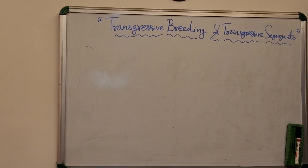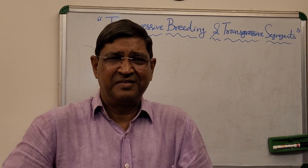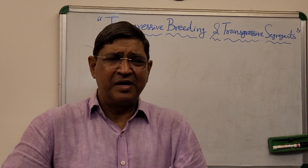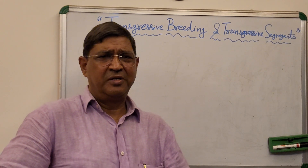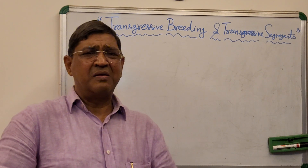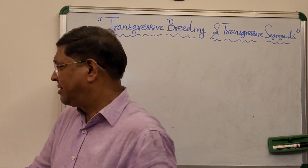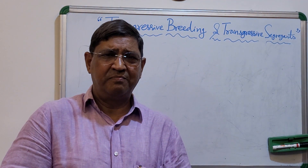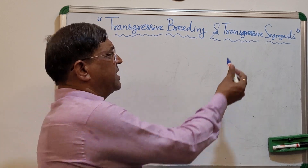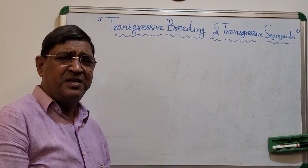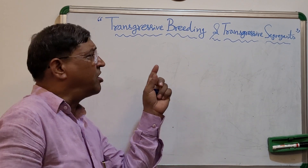Welcome dear students. Today I will be talking about transgressive breeding and transgressive segregants. Though in my earlier videos I have already dealt in detail about these, but in short I want to explain these two terms, because many times you get confused with other terms. Transgressive breeding is the method of breeding, particularly in self-pollinated crops, through which we utilize the transgressive segregants to develop a new variety.